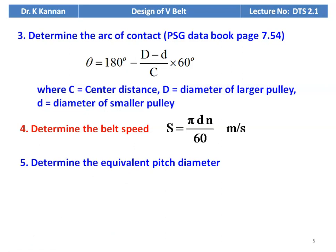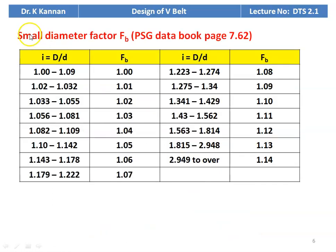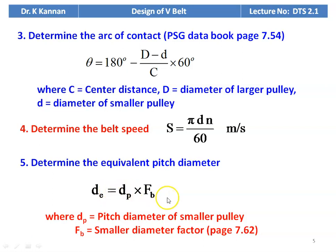Then determine the equivalent pitch diameter: de = dp × fb, where dp is the pitch diameter of the smaller pulley and fb is the small diameter factor, from page number 7.62 of the PSG data book. The small diameter factor table on page 7.62 gives fb values for different speed ratios i ranging from 1 to 2.949 or 3. Depending on your calculated i value, take the appropriate small diameter factor and calculate the equivalent pitch diameter.